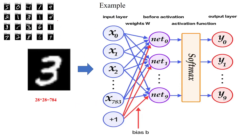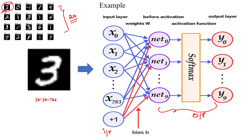Here we have an example where our dataset has 20 images. We pass these 20 images into a neural network to learn the digit available in each picture. For example, a picture containing the digit 5 should be recognized by our neural network. The neural network has two layers: an input layer and an output layer. Think of this as a single layer perceptron. Here I am passing an image that contains the digit 3, and the problem statement is to recognize the digit in the given picture.